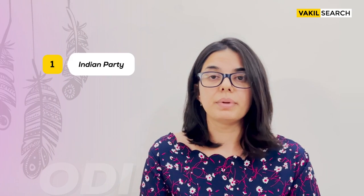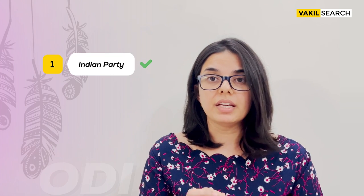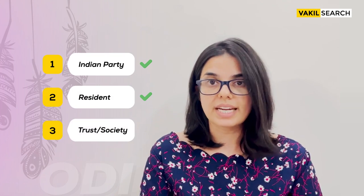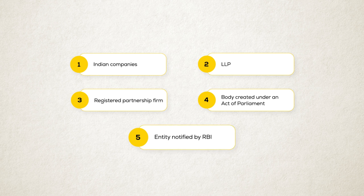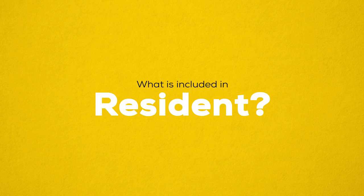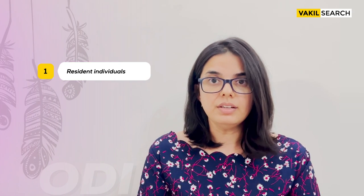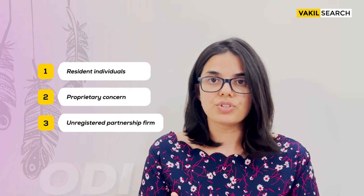The second aspect is who can make the investment. Any Indian party can make the investment, any resident can make the investment, and trusts and societies can also make the investment. The definition of Indian party includes Indian companies, LLPs, registered partnership firms, any body created by an act of parliament, and any entity notified by RBI. Resident includes resident Indians, proprietorship concerns, and unregistered partnership firms.